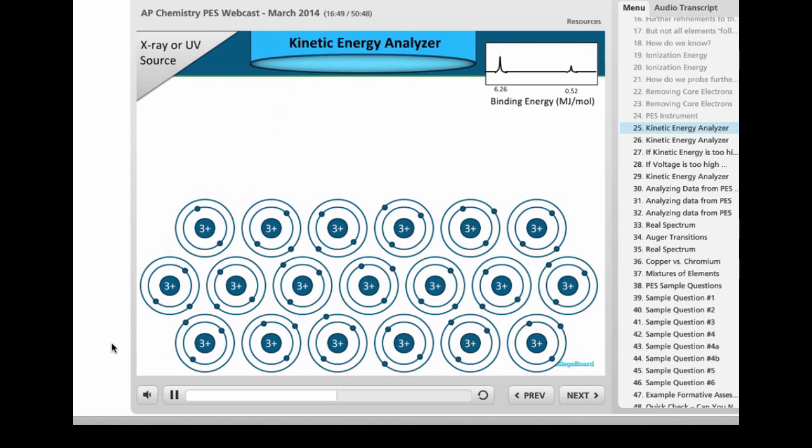If you look at this valence electron, you can see the peak at 0.52 binding energy seems to be amplified for the valence electrons. So one more core electron, you can see the binding energy of 6.26 megajoules per mole gets amplified.